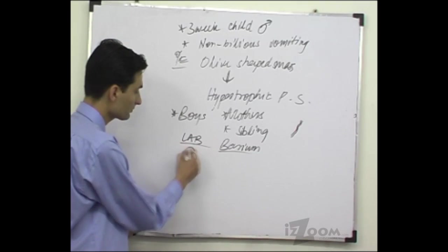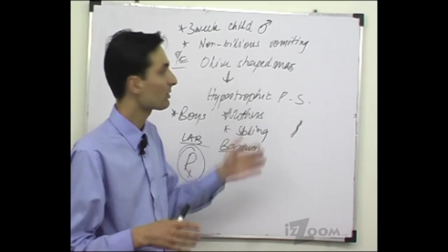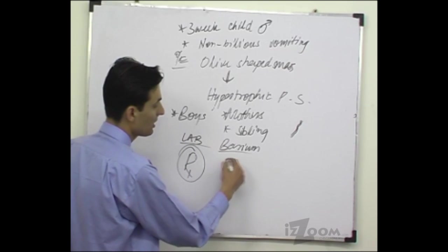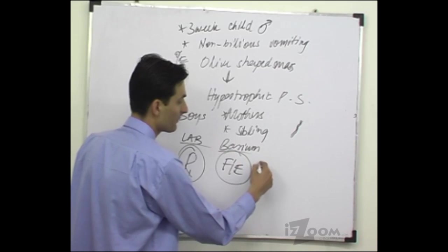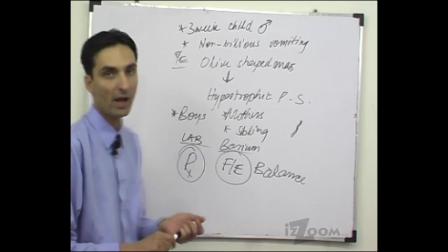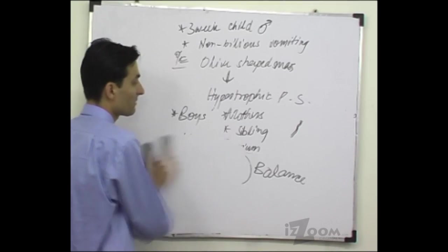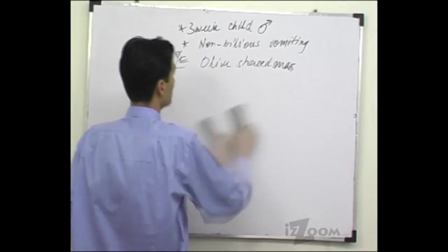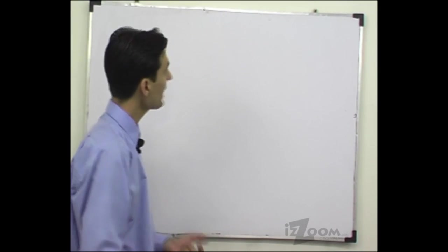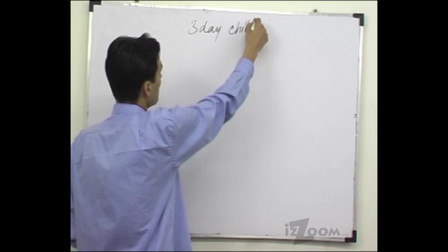Hypertrophic pyloric stenosis is treated by surgical correction. However, the first thing you must do is maintain fluid and electrolyte balance, because these children may have been vomiting for days. You must restore fluid and electrolyte balance before taking these patients to surgery.